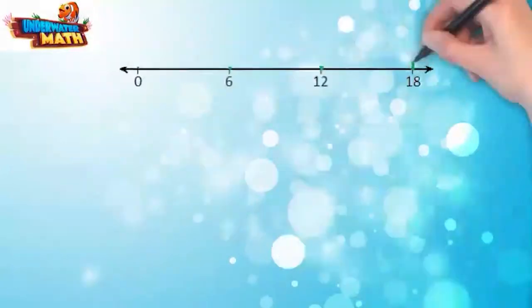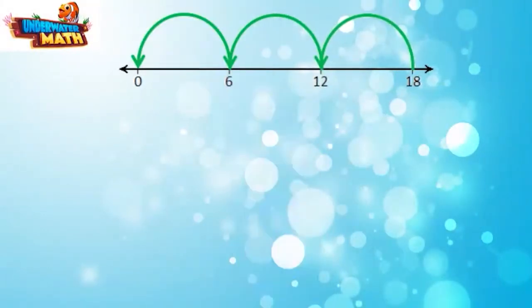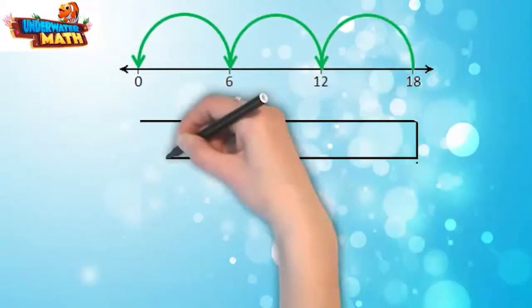We could show this on a number line too if you need a different visual. You'll notice that if we count back by sixes, it takes three hops. You're probably familiar with strip diagrams.